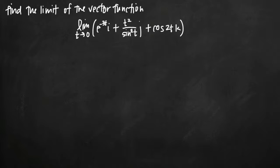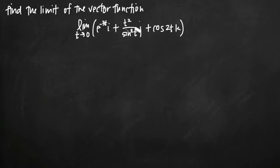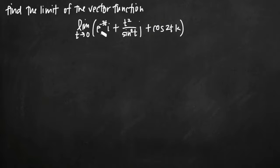Finding the limit of the vector function in this form is not too difficult, because to evaluate the limit as t goes to zero, all we need to evaluate are the coefficients on our i, j, and k components. The coefficients are the parts of our components that involve t, and we can evaluate the limit as t goes to zero of each of those separately for each component.